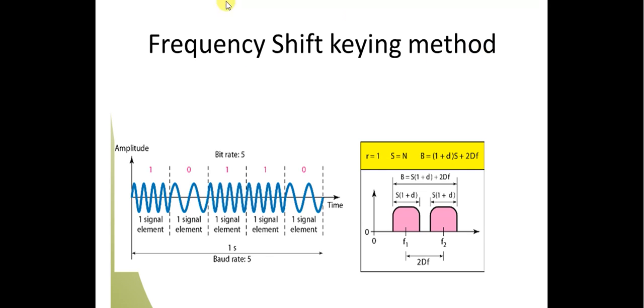In the frequency shift keying method, the frequency changes but the amplitude and phase remain the same. We know that digital to analog conversion takes digital data - zeros and ones - and converts it into analog waves.